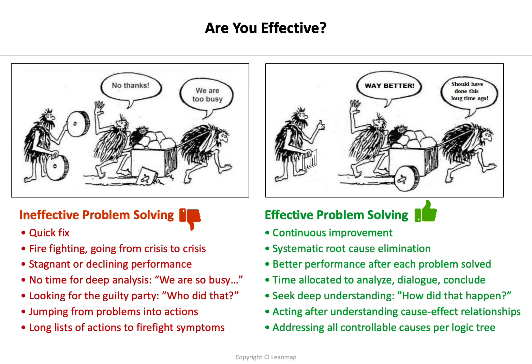Jumping from problems into actions, versus acting only after understanding the cause-effect relationships. Creating long lists of actions to firefight symptoms, versus addressing all controllable causes per logic tree. Focus on defects, cost, sales, and profits, versus focus on process capability that drives performance — so that at the end, sales and profits increase.